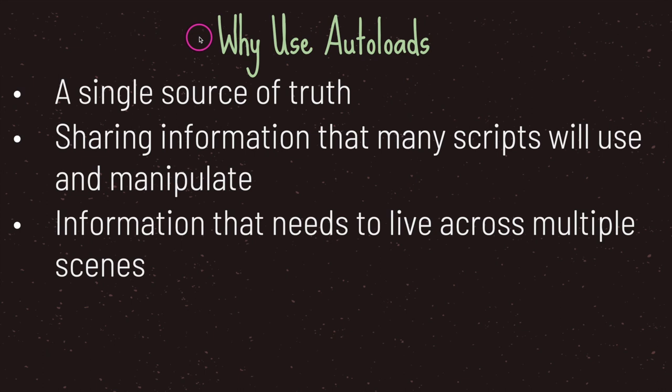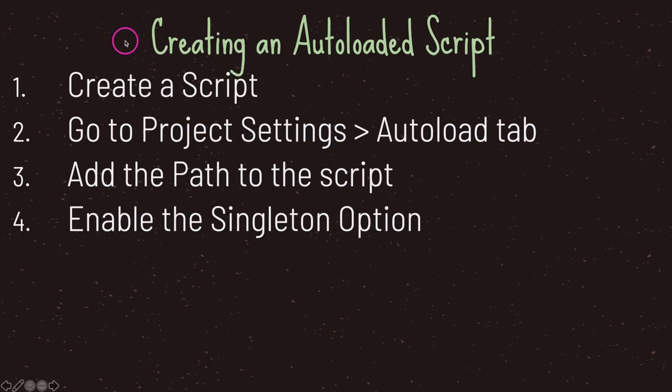On top of that, autoloads allows us to keep our data living across multiple scenes when we change scenes. Creating an auto-loaded script is quite simple and can be done in four easy steps: first, create your script; then go to Project Settings and the AutoLoad tab; add the path to your script; and lastly, enable the singleton option. You will then have a single instantiated object on the same tree no matter which scene is loaded.